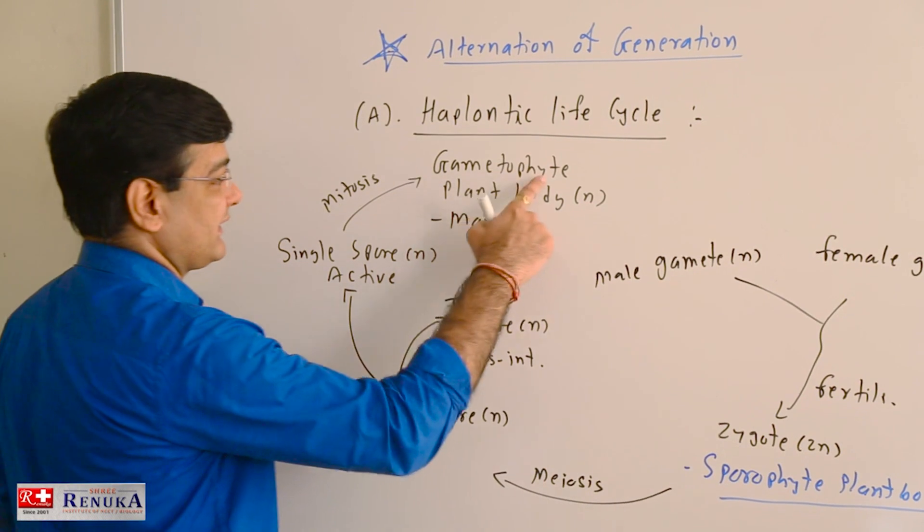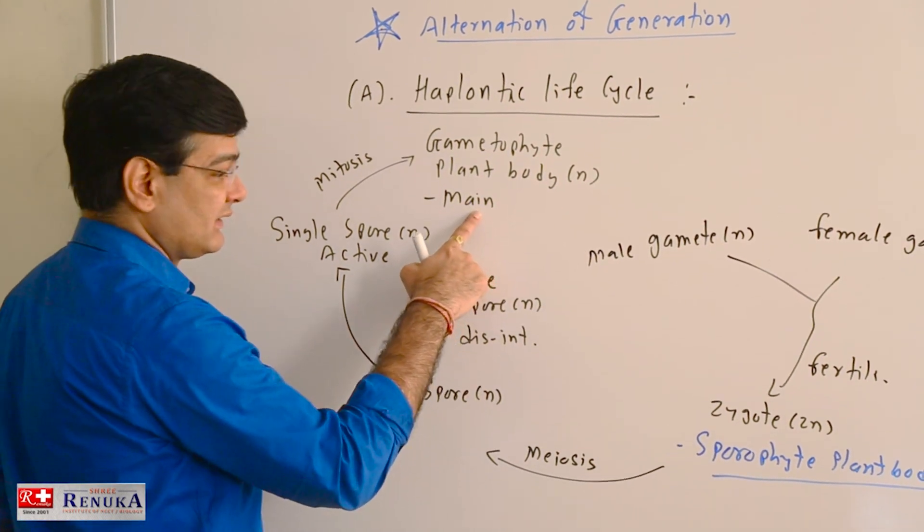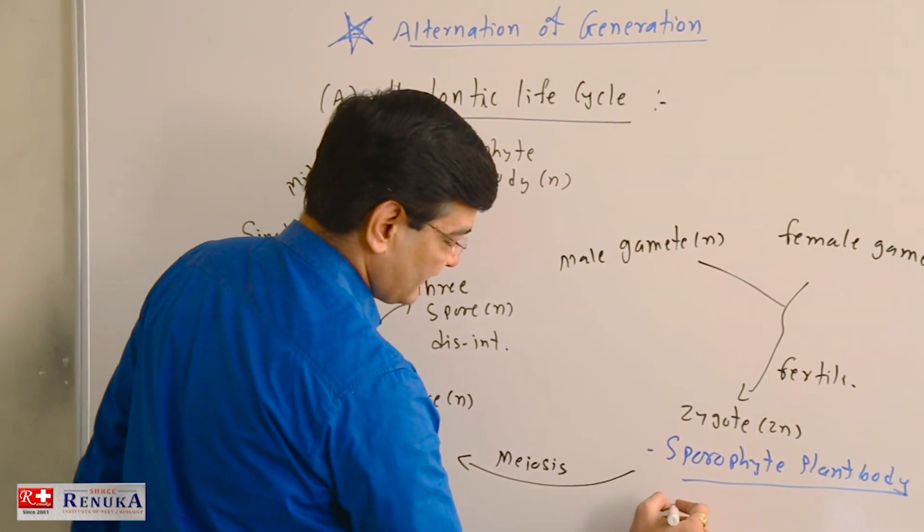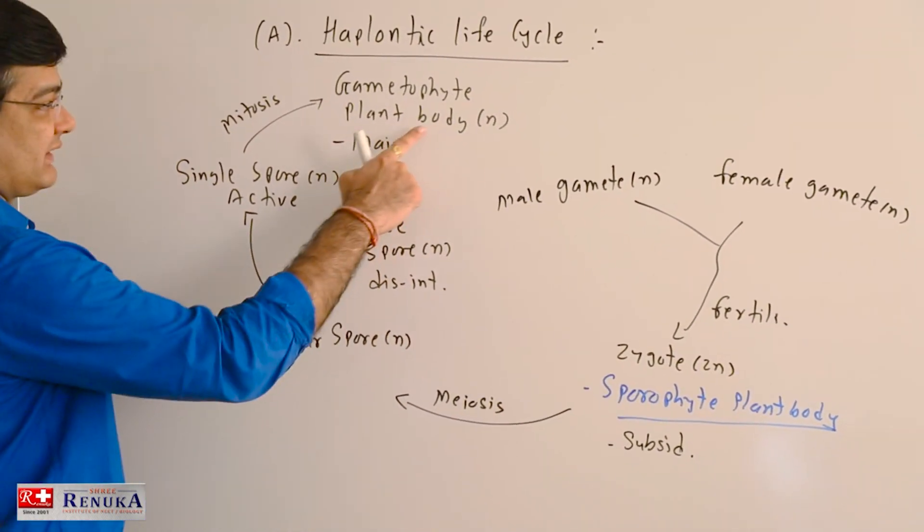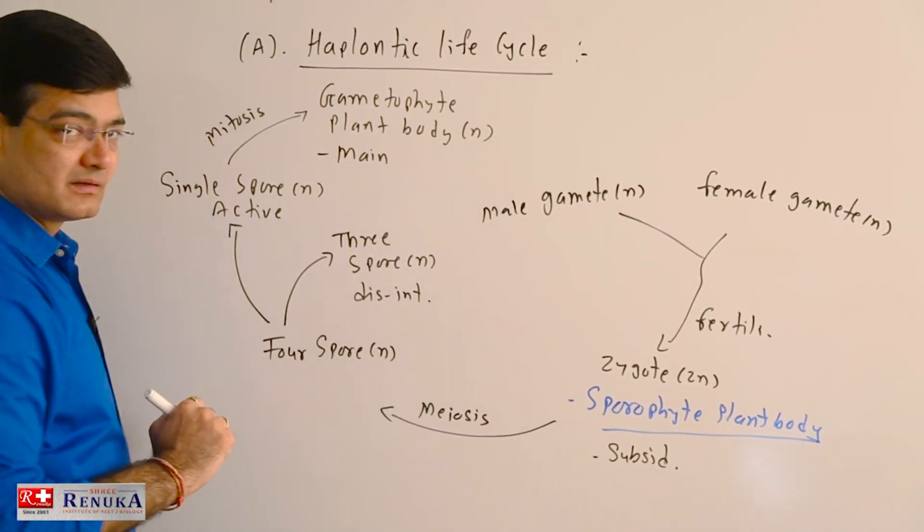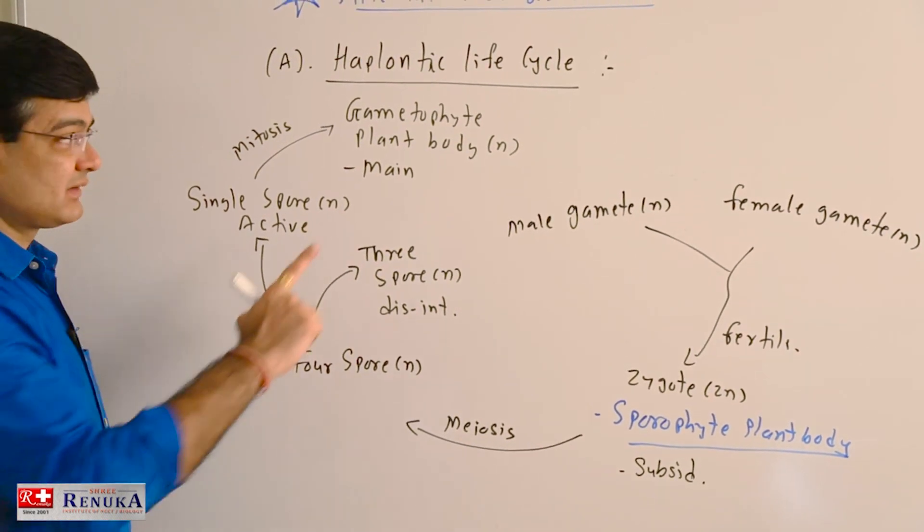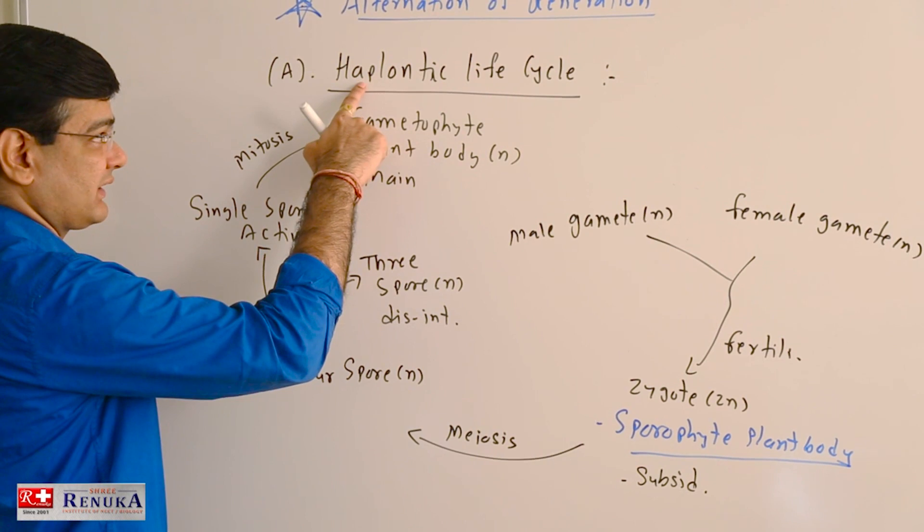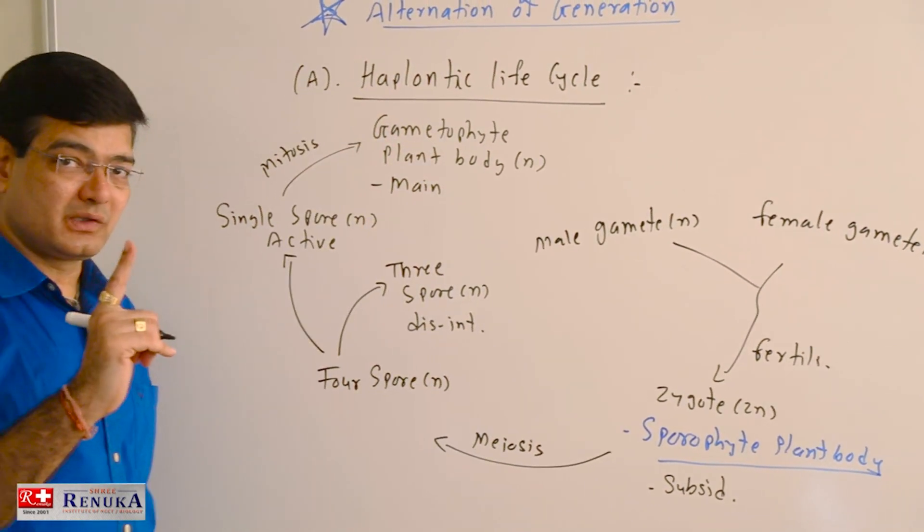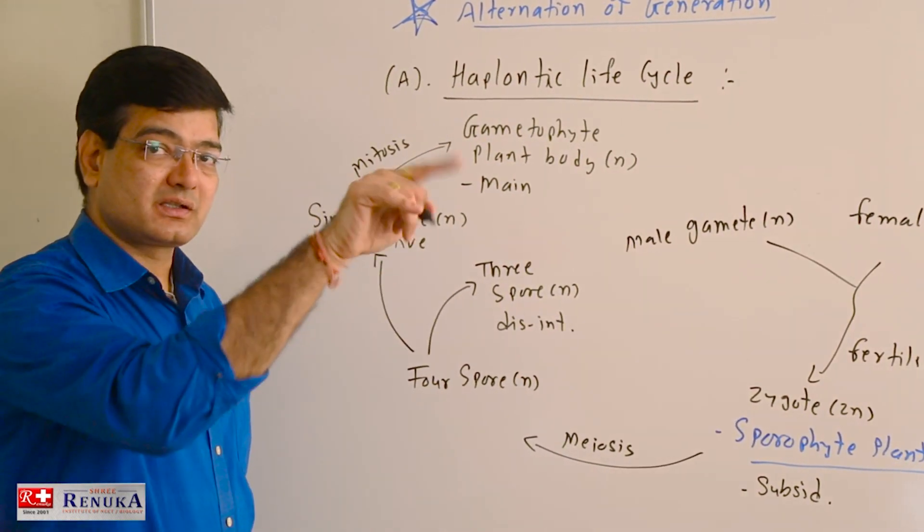So gametophytic plant body is the main phase here, and sporophytic plant body is a subsidiary phase. And so it is called haplontic life cycle, as I told earlier. Main plant body if haploid, the life cycle is haplontic. If main plant body is diploid, the life cycle is called diplontic.